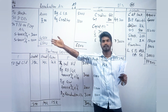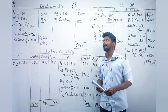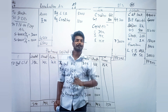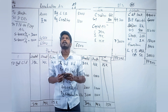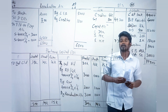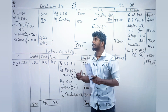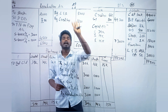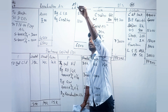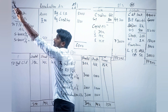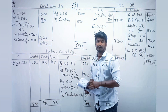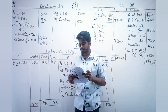First, while starting with admission of partners we begin with the revaluation account. If an asset decreases we debit that transaction; if an asset increases we credit it. In the same way, if a liability increases we debit it, and if a liability decreases we credit it. I have already written it on the board.